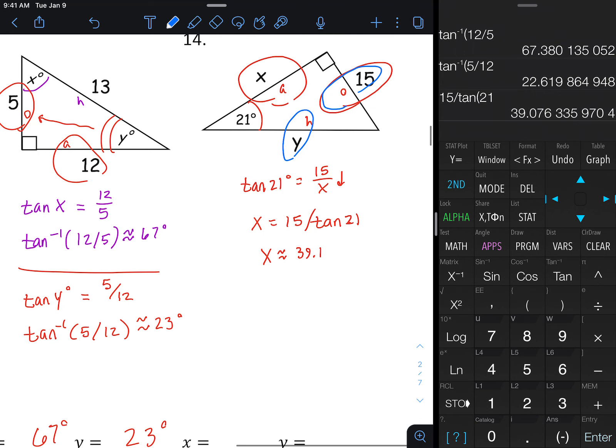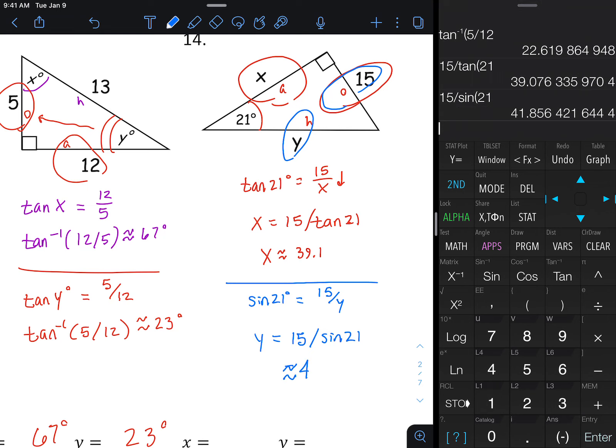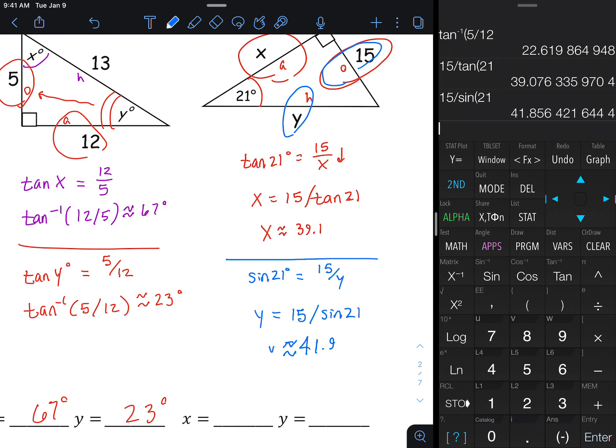And then let's do the same thing for finding Y, using the O and H this time, and that would be the sine function. Sine of 21 degrees, and then 15 over Y. And then 15, as far as calculator ready goes, this would be after you cross multiply and divide, 15 divided by sine of 21, and roughly 41.9 after you round, and that was for Y.